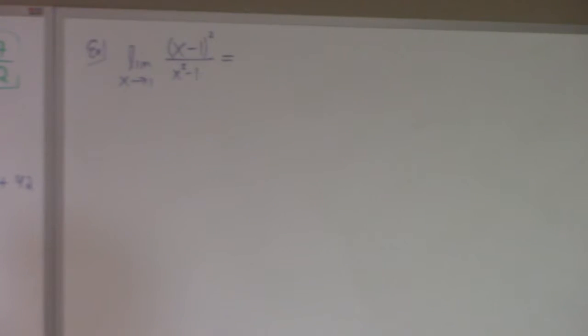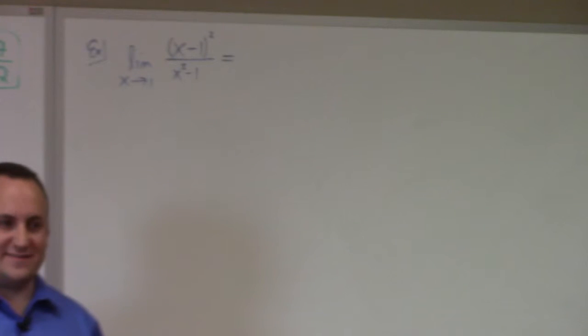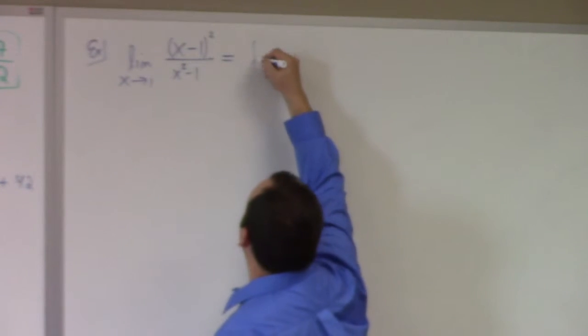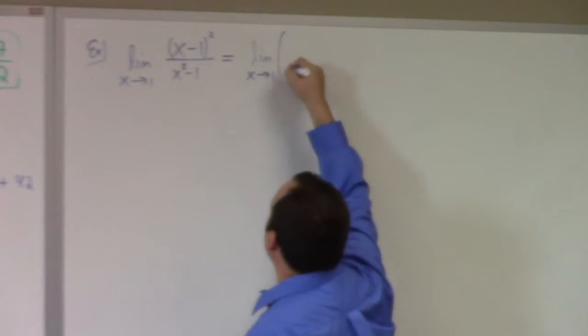So what happens when you try to plug in one? Exactly, undefined. So my first thing I try in any limit I'm faced with is to plug in the limit point and see if it works. This one doesn't because if I plug in one I get zero over zero which is an invitation to keep working. You're not done. So what you've got to do then is algebra. And what can we do? Factoring is our friend.